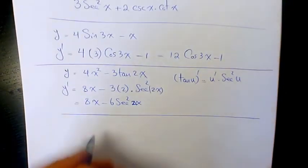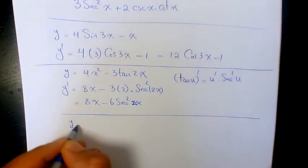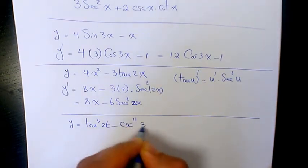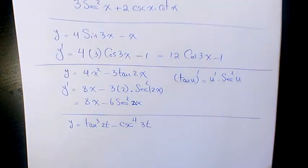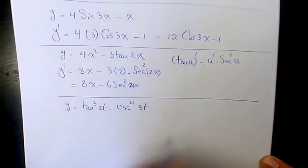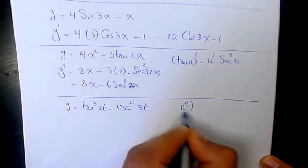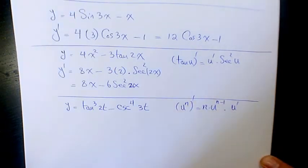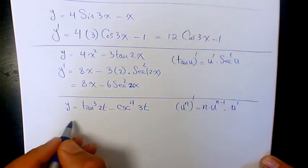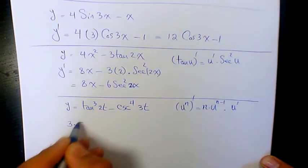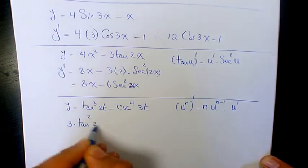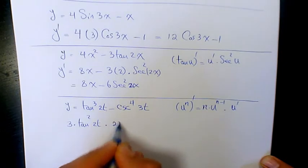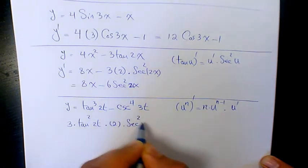Next example: y equals tan cubed 2t minus cosecant to the power of 4 of 3t. For the first term, using the power rule — the derivative of u to the n is n times u to the n minus 1 times u prime — we get 3 times tan squared 2t times the derivative of tan 2t, which is 2 times secant squared 2t.